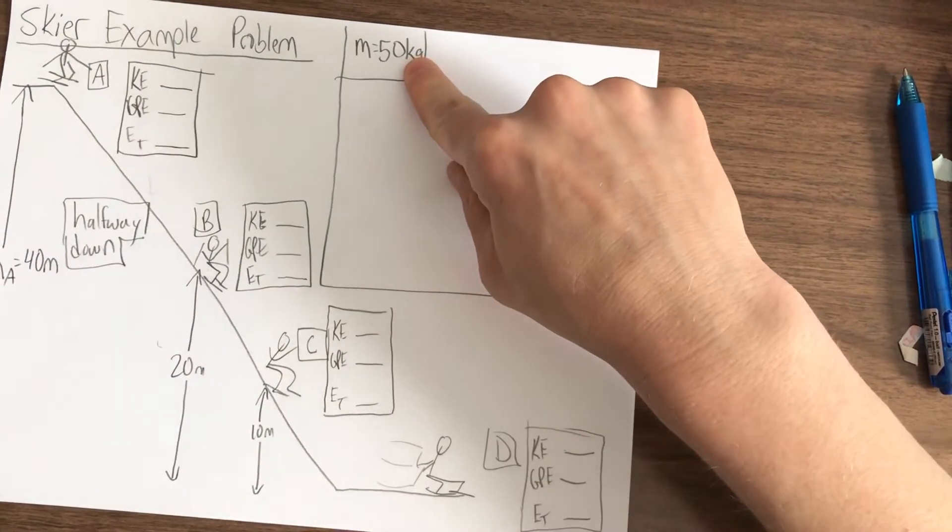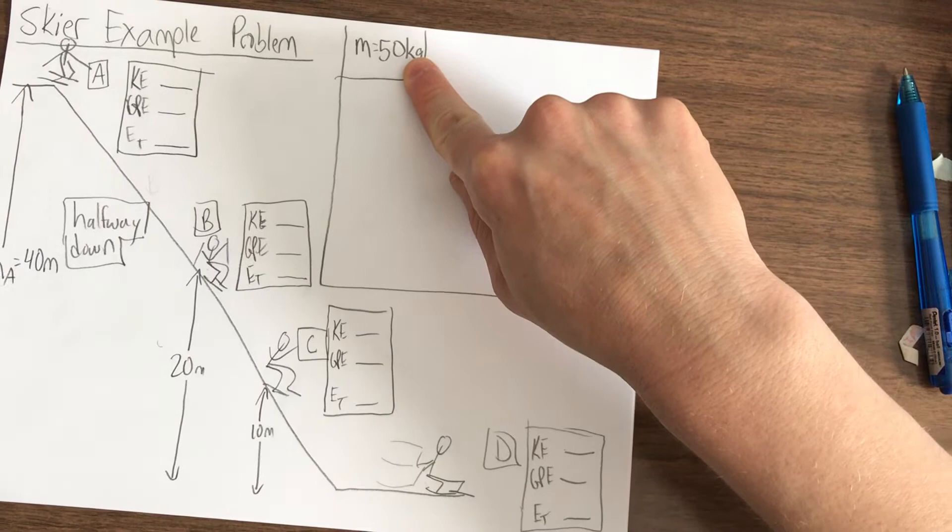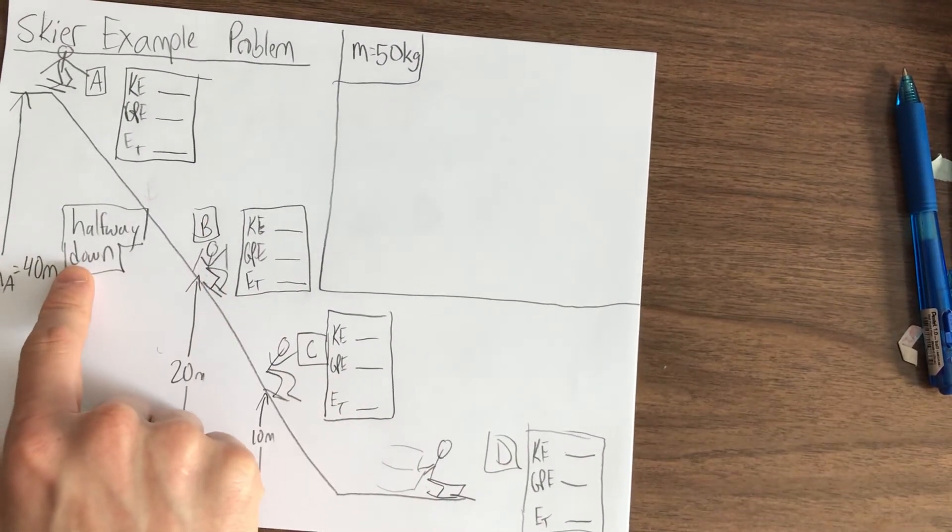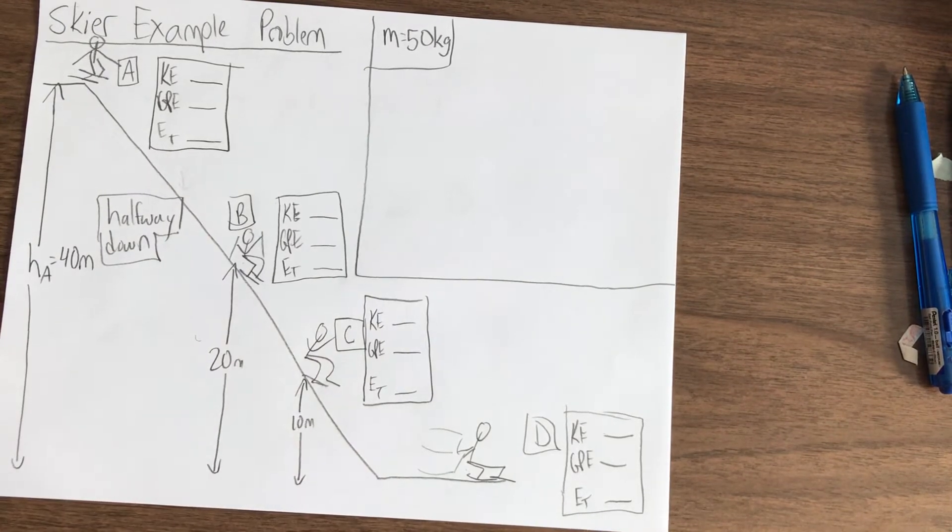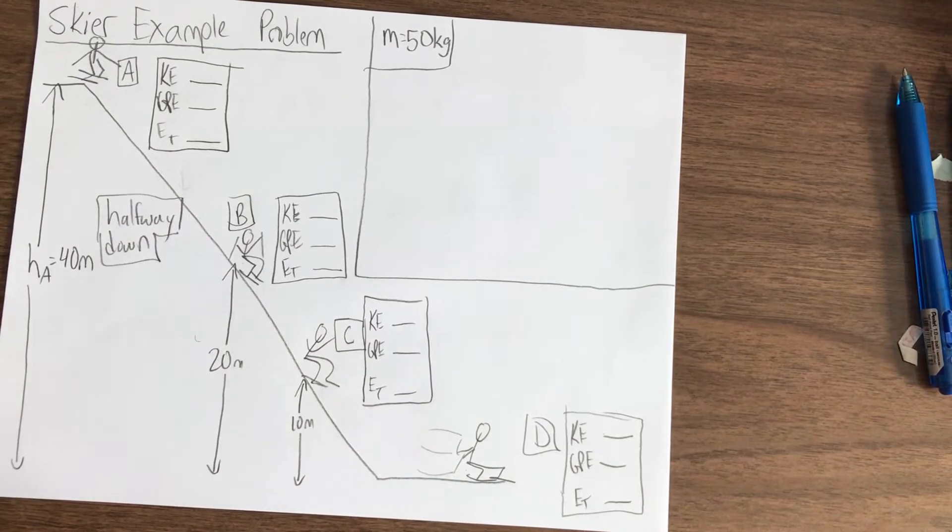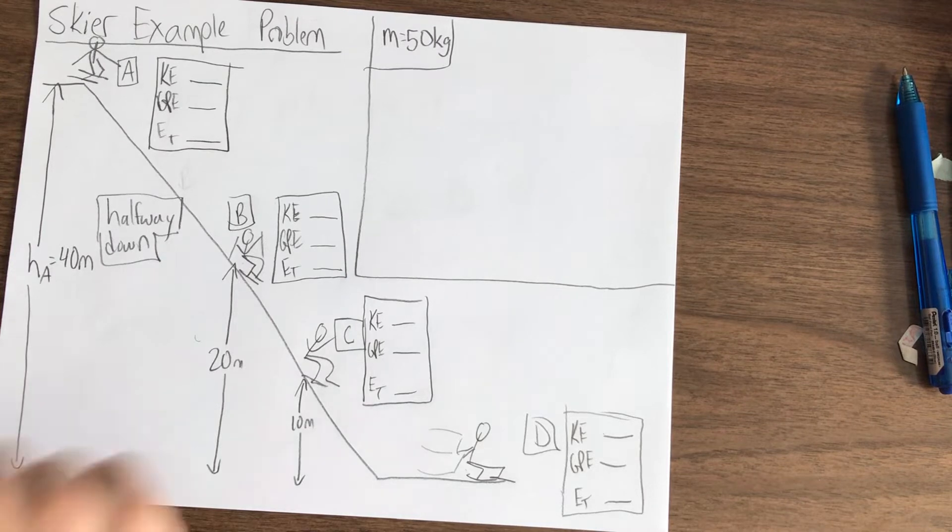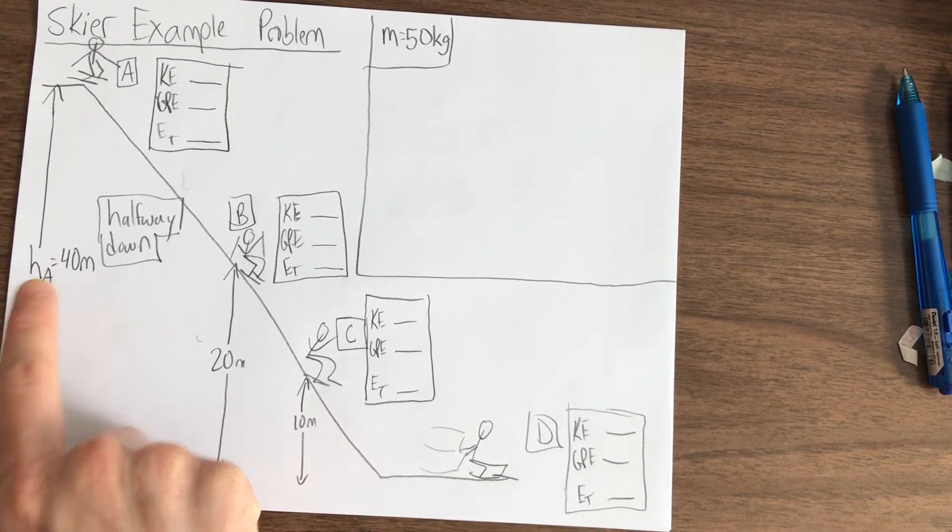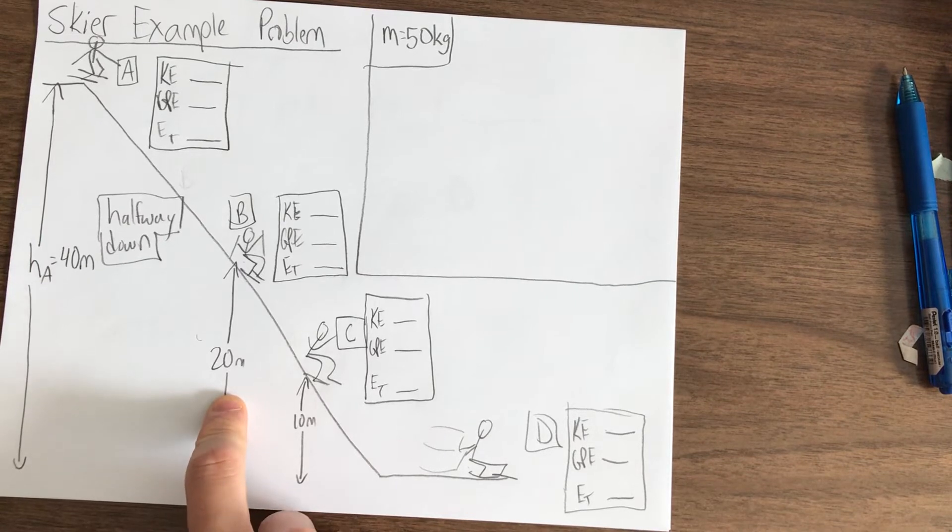The mass of the skier is 50 kilograms. Letter B is halfway down the slope. And then we have height as given information for position A, the skier starts at 40 meters up, halfway down it's only 20 meters up.